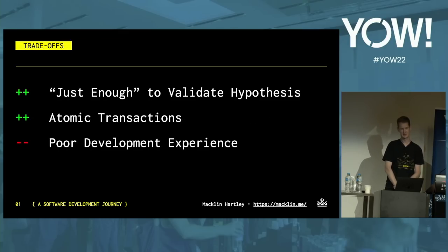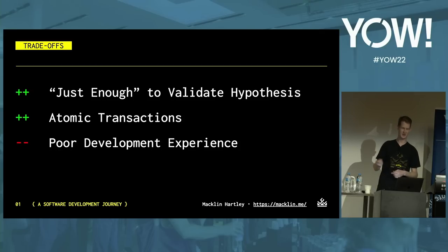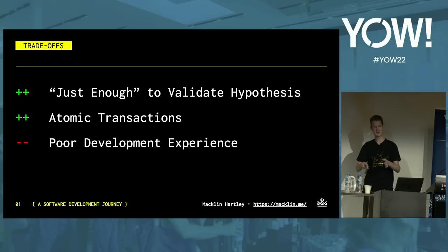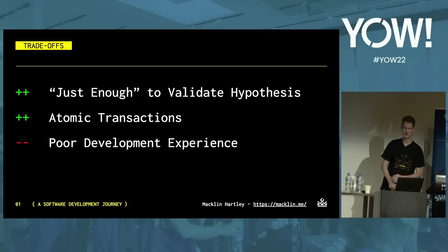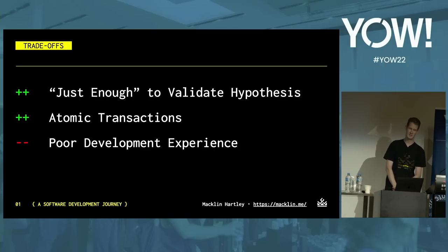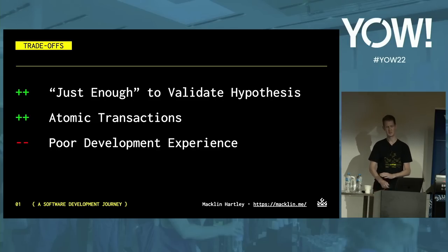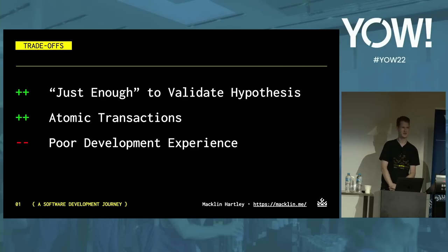To summarize, this solution did what it needed to do at the time. We validated the hypothesis about personalized avatars, got to market quickly, and the chosen architecture has some unique and powerful characteristics — like atomic transactions. But over time, the developer experience started to suffer, especially as the team grew. The boundaries of our monolithic architecture became unclear, and we had many people working over the top of each other. This workflow couldn't be deployed without deploying everything else at the same time. So how could we fix this?